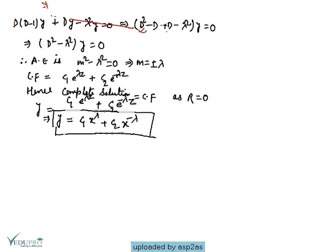This simplifies to (D² − D + D − λ²)y = 0, which gives (D² − λ²)y = 0. The auxiliary equation is m² = λ², giving roots m = ±λ. So the complementary function is C₁e^(λz) + C₂e^(−λz).